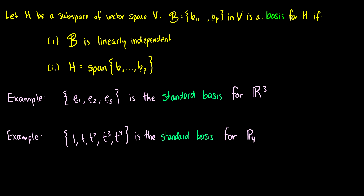For instance, the unit vectors e1, e2, and e3 form the standard basis for R3. These are (1,0,0), (0,1,0), and (0,0,1). They satisfy both conditions: they are linearly independent, and they span all of R3.